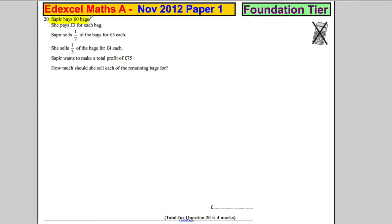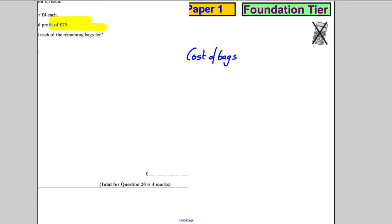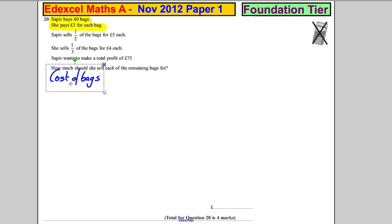She buys 60 bags and she pays three pounds each. Cost of bags, actually let's write it down here. Cost of bags would be equal to 60 multiplied by three, which is equal to 180 pounds, right?